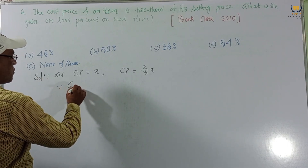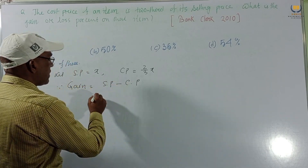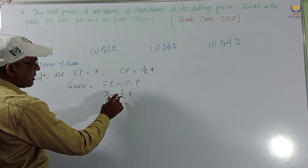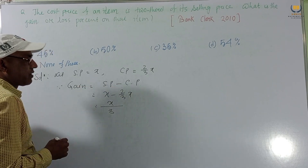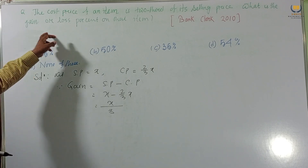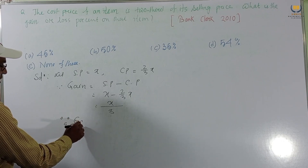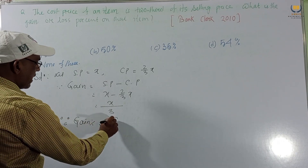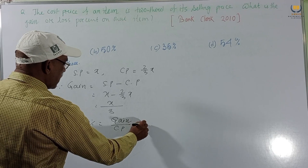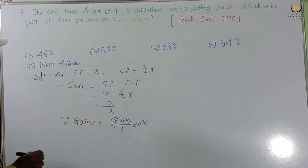Gain = SP − CP = x − (2/3)x = (3x − 2x)/3 = x/3. This is our gain. Now for gain percent, we use the formula: Gain percent = (Gain / CP) × 100.